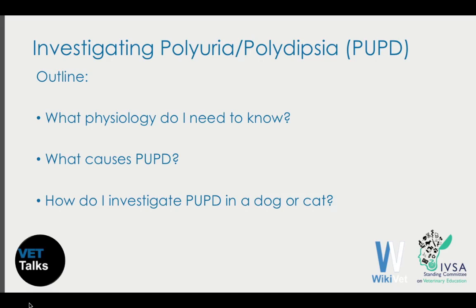So an outline of what we're going to talk about. Very briefly, we're going to remind you a little bit about what areas of physiology you may need to revise, and if they feel completely unfamiliar to you, then you might need to go back and look at some physiology notes before you watch the rest of this presentation. We're going to discuss what causes polyuria and polydipsia — note that they're often abbreviated to PUPD, so you might hear me say that quite a lot. And then we're going to talk about a clinical approach to investigating PUPD as a presenting problem in a dog or cat that comes to you in the clinic.